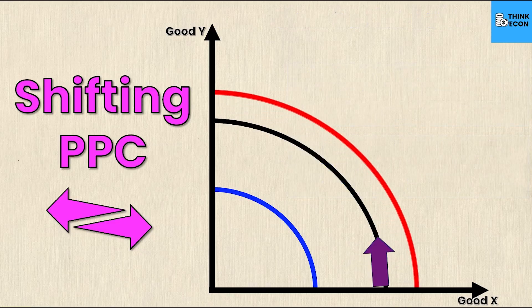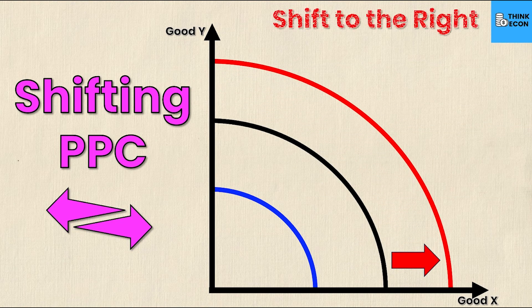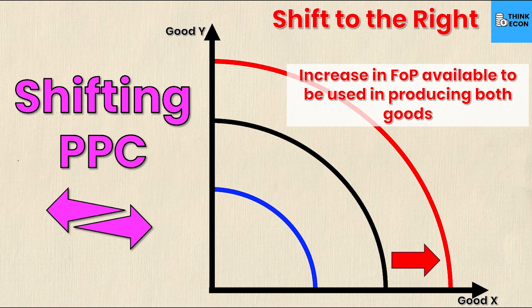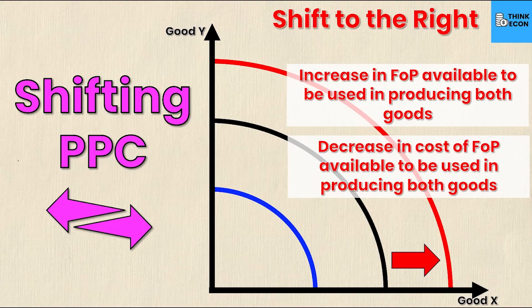Alternatively, we could have the opposite: a shift to the right. This could be caused by an increase in the factors of production available to be used in producing both goods, or a decrease in the cost of those factors of production. The curve moves to the right, meaning I can now produce more of good X and more of good Y — every point on the new PPC is farther from the origin than on the original curve.